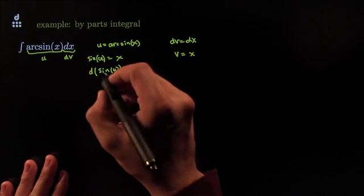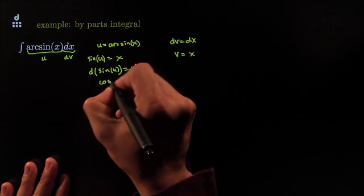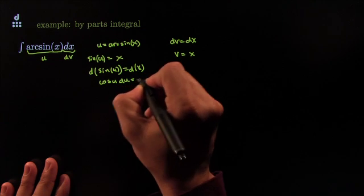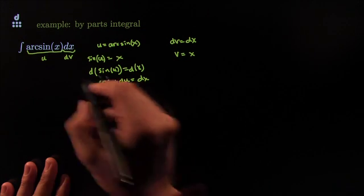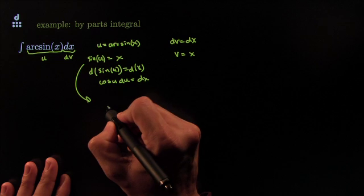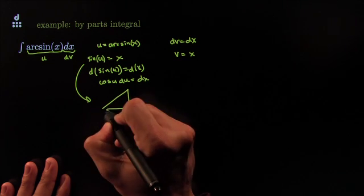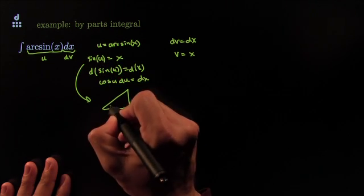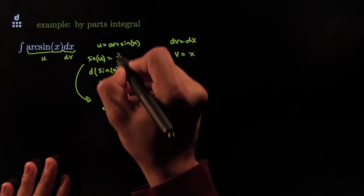Just slap the d on both sides. This becomes cosine of u, differential of u is equal to dx. And from here we get the little dictionary part where the angle was u on the right triangle, reference triangle.